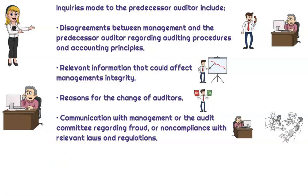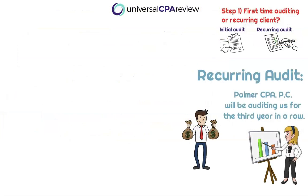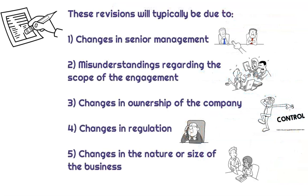If there's an initial audit, there's going to be plenty of pregame work. We want to understand who we're about to work with. Whereas recurring audits won't have as much pregame work. For a recurring audit, the auditor should simply assess whether circumstances require that the terms of the audit engagement need to be revised. Revisions are typically due to changes in senior management, misunderstandings regarding the scope, changes in ownership, changes in regulation, or changes in the nature or size of the business.